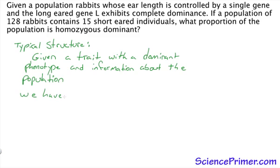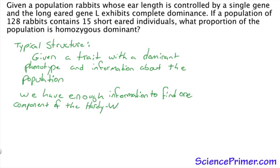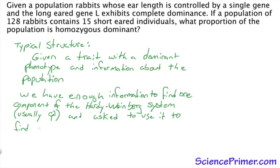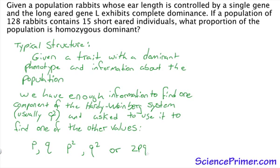We have enough information in the way the question is structured to find one component of the Hardy-Weinberg system. It's usually q squared. Using this information, we're asked to find some other value or one of the other values within the Hardy-Weinberg system, and these values are p, q, p squared, q squared, or 2pq.